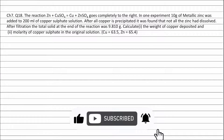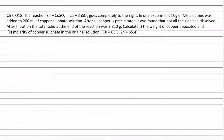Question 18. The reaction zinc plus copper sulphate forming copper plus zinc sulphate goes completely to the right. In one experiment, 10 grams of metallic zinc was added to 200 ml of copper sulphate solution. After all copper is precipitated, it was found that not all the zinc had dissolved. After filtration, the total solid at the end of the reaction was 9.810 grams. Calculate first the weight of copper deposited and second the molarity of copper sulphate in the original solution. Atomic weight of copper is 63.5 and atomic weight of zinc is 65.4.